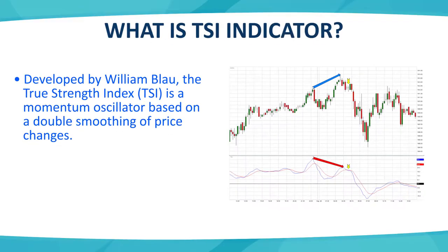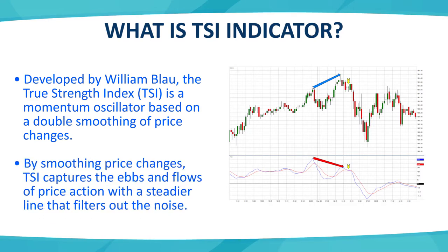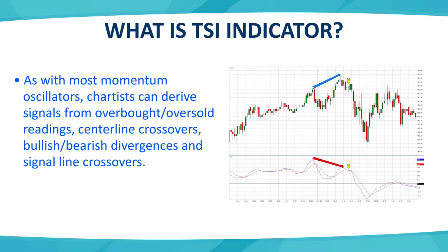TSI helps chartists identify trends and pick reversals. It helps us identify overbought and oversold positions. TSI is a momentum oscillator which is doubly smoothed through EMAs, filtering out short-term noise and unwanted fluctuations. For chartists, this indicator helps identify overbought and oversold readings, centerline crossovers, bullish and bearish divergence, and signal line crossovers.